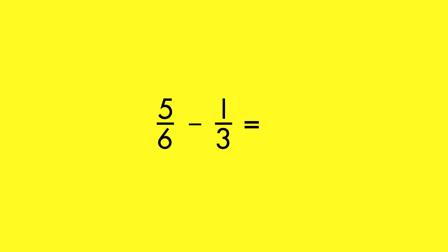In order to subtract fractions, they must have the same denominator. Create equivalent fractions that have a common denominator. Then, find the difference of the numerators. The denominator stays the same. If possible, simplify.